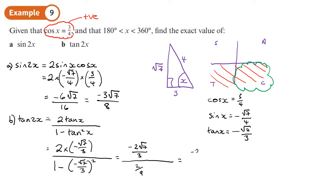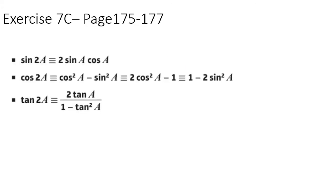So negative 2 root 7 over 3 times by 9 over 2, reciprocal. 2's will cancel out, just leave me with negative 9 root 7 over 3. Oh, I could have cancelled out with the 9's as well. Divide the top and the bottom by 3 to leave me with negative 3 root 7.